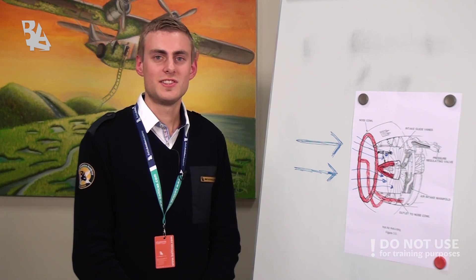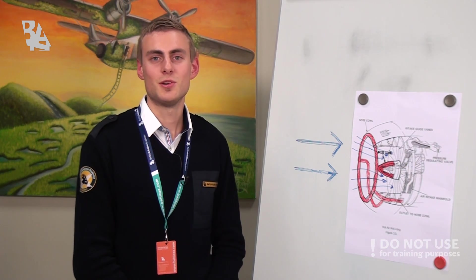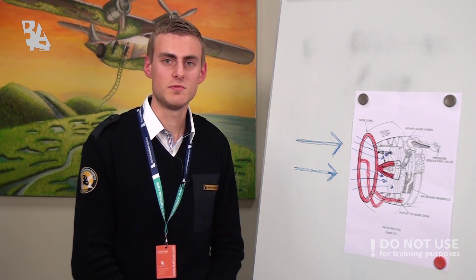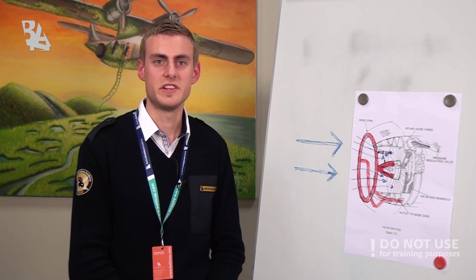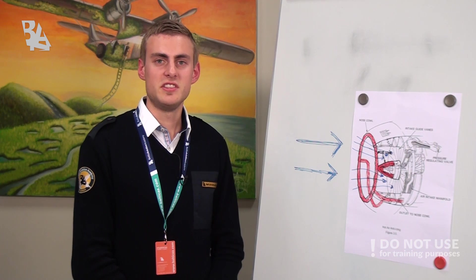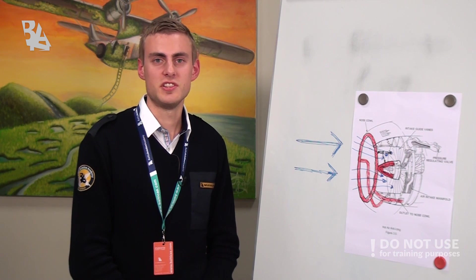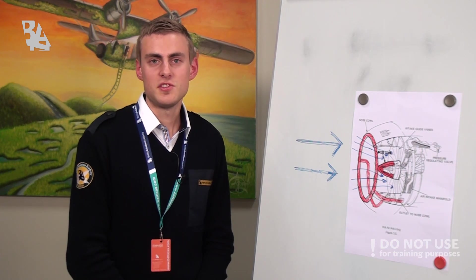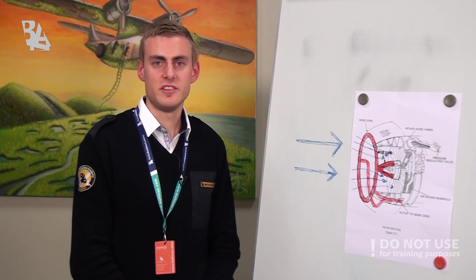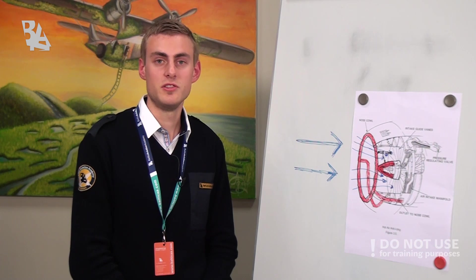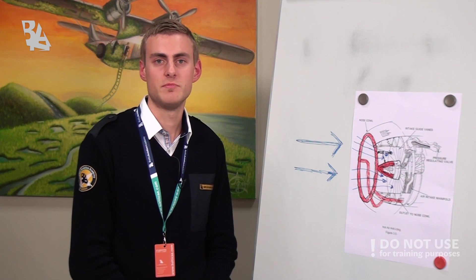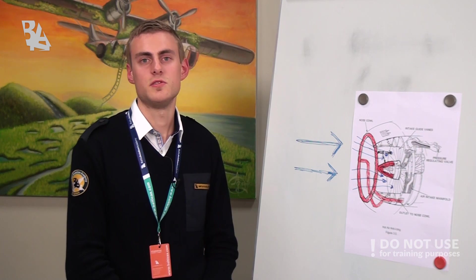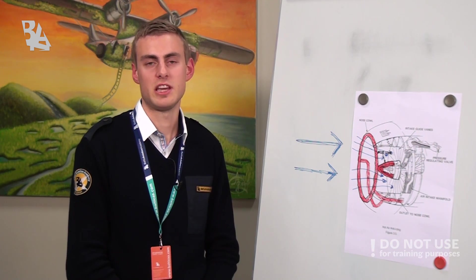Engine anti-ice should be turned on if the total air temperature is 10 degrees or below and if visible moisture is present. The engine bleeds steal air from the engines and reduce engine performance. That is why you sometimes turn off the engine bleeds when you want maximum takeoff performance, but if that is the case you should use the APU to handle the cabin pressure.